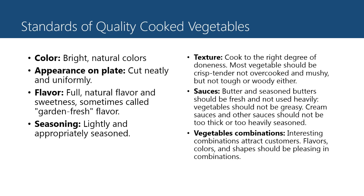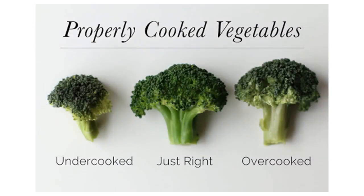Sauces and seasoned butter should be fresh and not used heavily — vegetables should not be greasy. Cream sauces and other sauces should not be too thick or too heavily seasoned. Vegetable combinations: interesting combinations attract customers, and flavors, colors, and shapes should be pleasing in combination. As you can see in the picture, there are the different doneness levels of vegetables from undercooked to overcooked — of course, we should choose just right.